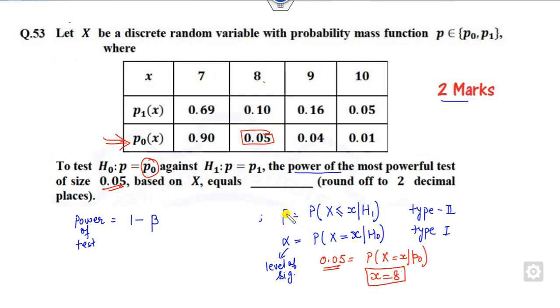So based on this, you can find the value of beta from here. What is the beta? It's probability of X less than or equal to 8. What is the H1? P1. You can see H1 is here. So which one is satisfied for the H1? These two values. So what is the answer of this? It is 0.69 plus 0.10.